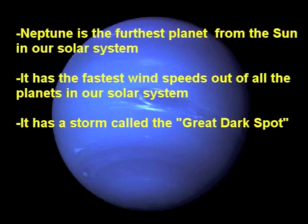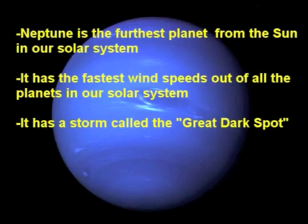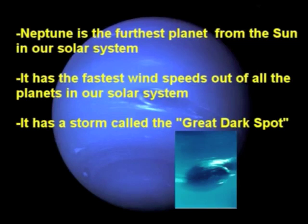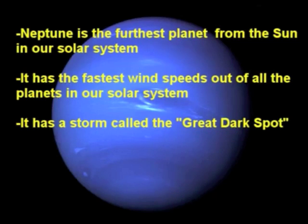The last planet in the solar system is Neptune. The blue color of its atmosphere is also caused by methane, similar to Uranus. It has the fastest wind speeds out of all the planets. It also has a cyclonic storm called the Great Dark Spot. Neptune is similar to the other gaseous planets in composition, as well as having a ring system.